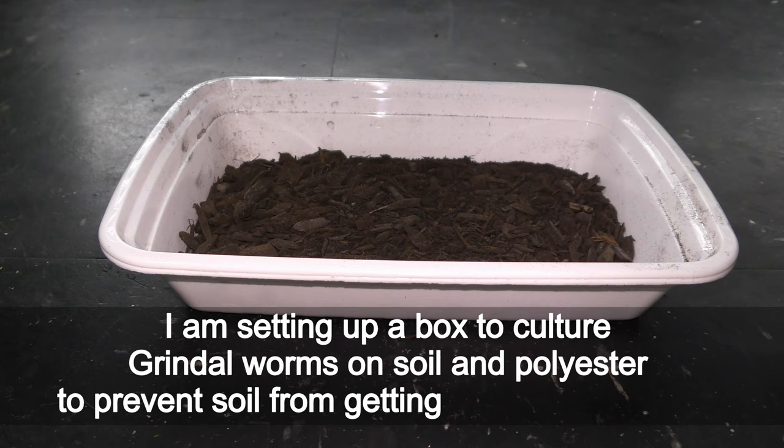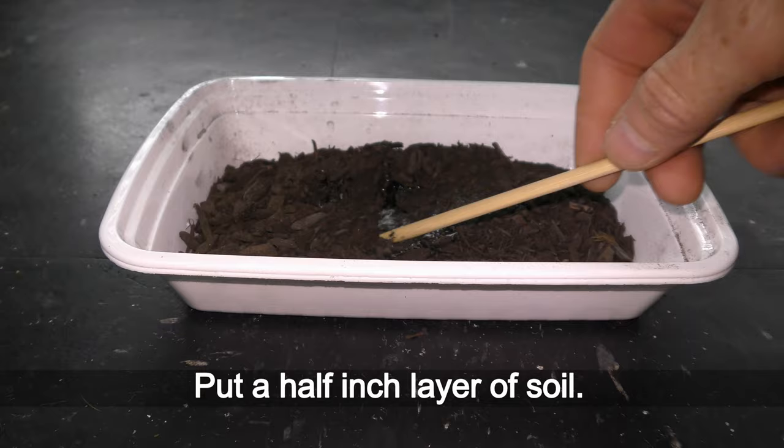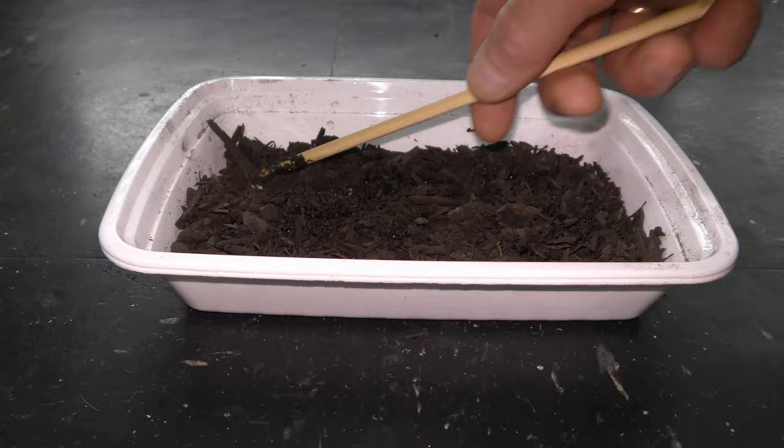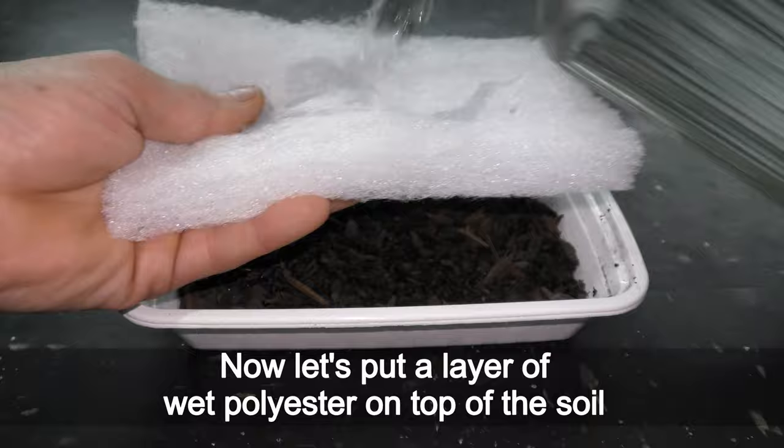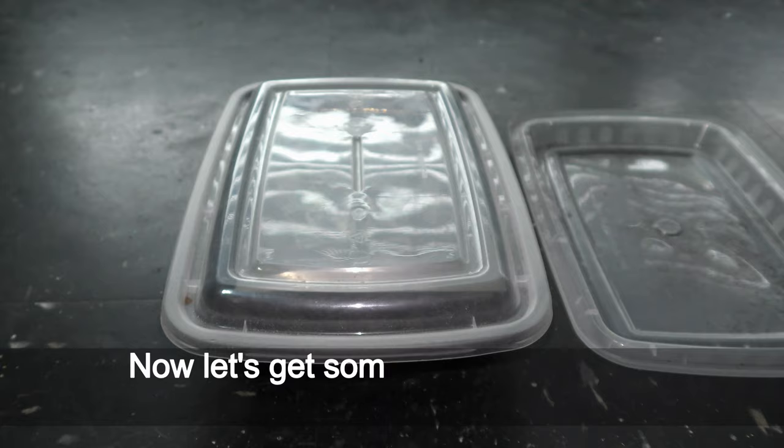June 4th, 2021. I am setting up a box to culture grindal worms on soil and polyester to prevent soil from getting into my aquariums. Put a heavy inch layer of soil. Add dechlorinated water to make soil damp. Now let's put a layer of wet polyester on top of the soil.